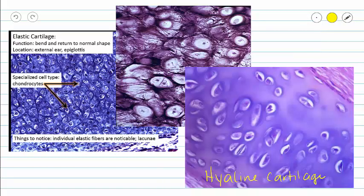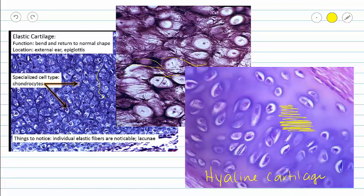Lastly, I want to compare our elastic cartilage to our hyaline cartilage so that you can see the differences. In our elastic cartilage, you can clearly see fibers running in between our lacunae. In hyaline cartilage, we have that smudgy appearance where you don't see any individual fibers.